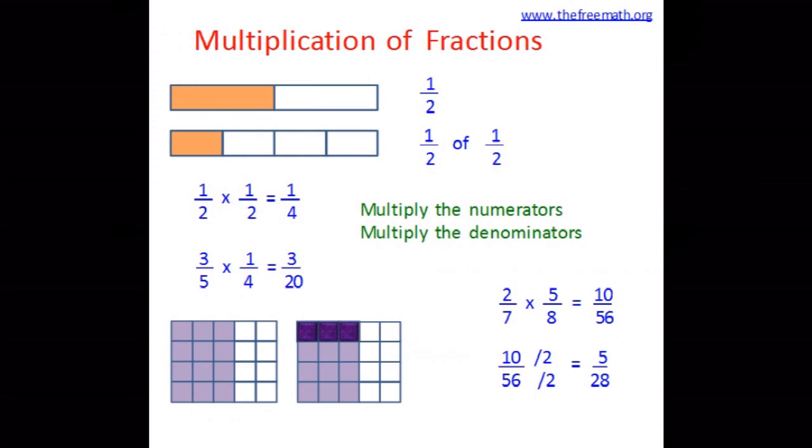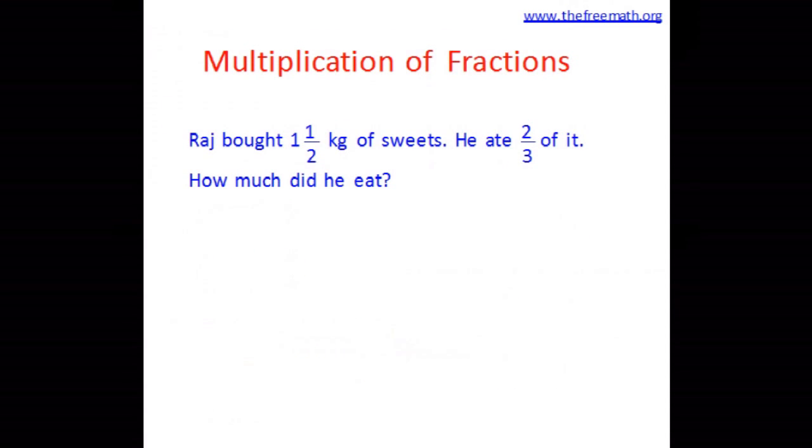Now let's look at this word problem here. Raj bought 1 and half kg of sweets and he ate 2 third of it. So how much did he eat? So 1 and half is a mixed number. Let's first convert that to an improper fraction. So 2 ones are 2 plus 1 is 3, 3 over 2 is an improper fraction. So we will multiply 3 over 2 by 2 over 3 because he ate 2 third of it. So 3 twos are 6 and 2 threes are 6. The answer is 6 over 6 means 1. That means Raj ate 1 kg of sweets.